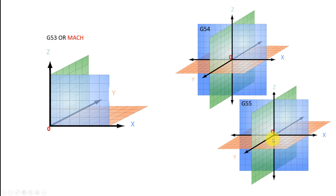The next coordinate system we will use is G55, and its zero position will be different from G54. That's why we use these two different coordinate systems on the same item — so we can continue our work without loading a new file. The zero for G55 could be here, because this item is wider on the Y axis compared to the G54 side.